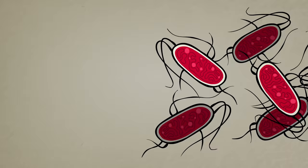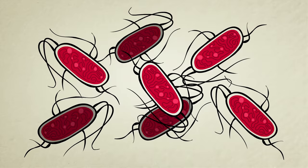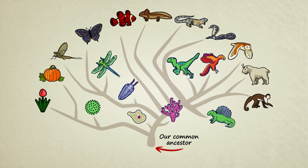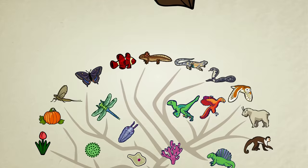Even the simplest bacteria alive today are far too complex to have popped into existence in a single step. Furthermore, the first reproducing creature could not have developed through biological evolution because biological evolution requires reproduction in order to work. The origin of life needs its own explanation.